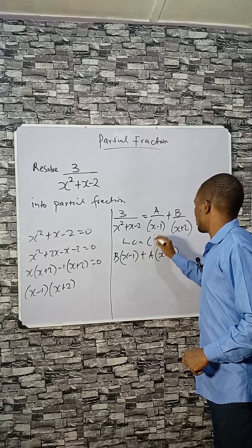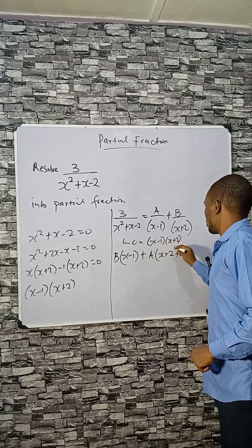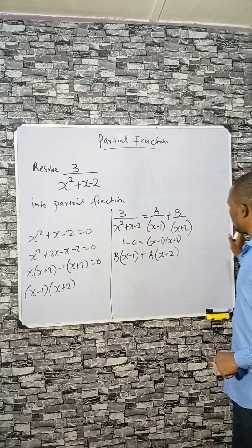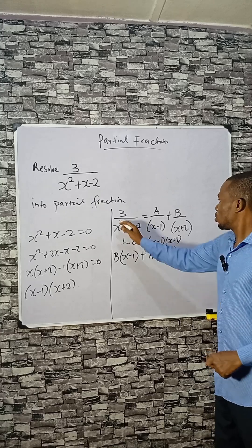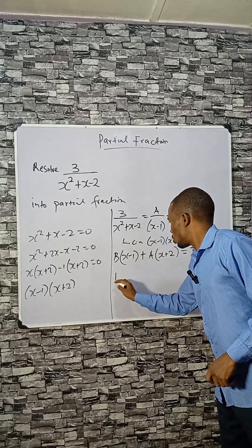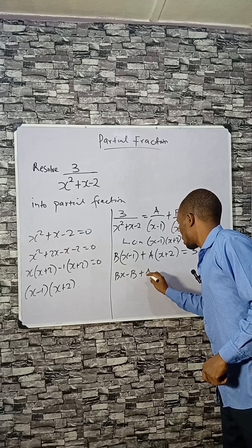The LCM here is x minus 1 and x plus 2. Multiply the left hand side and the right hand side by the LCM. You have equals to 3, so Bx minus B plus Ax plus 2A equals to 3.